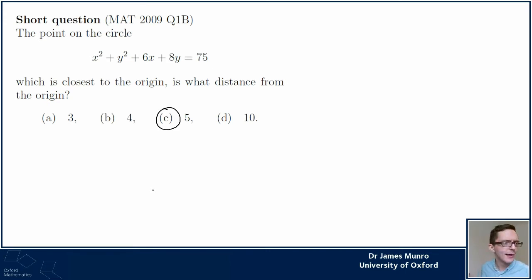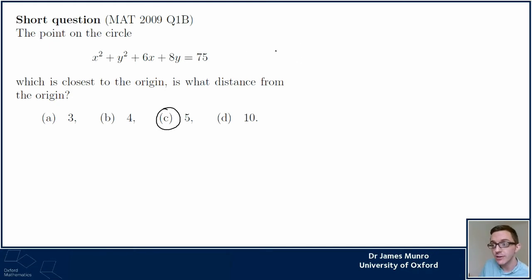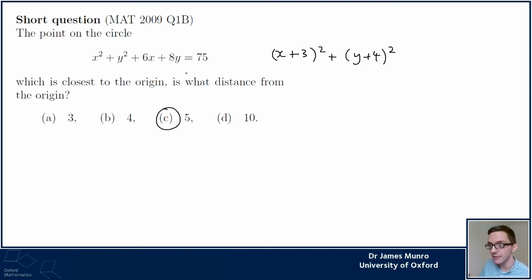Laura in chat says complete the square and find the center - I think that's a really good approach. So taking the equation for this circle and completing the square, I think this is going to be (x + 3)² + (y + 4)². I'm thinking about the x² + 6x and the y² + 8y, and I need to subtract 9 from this term and subtract 16 from this term so it's all still equal.